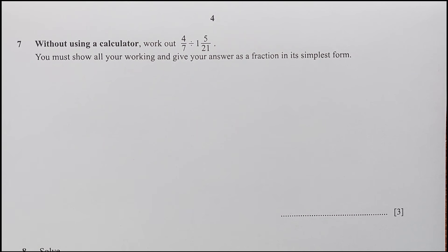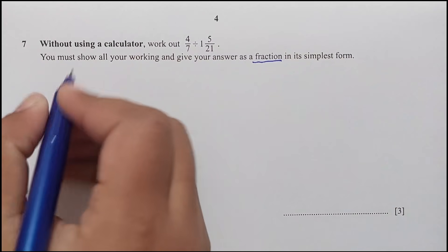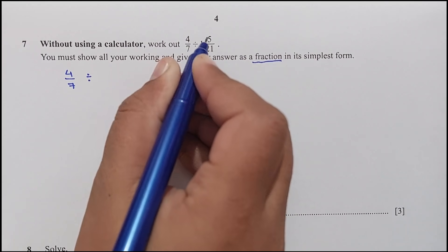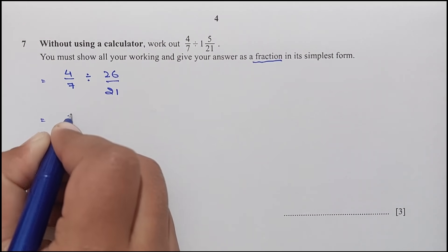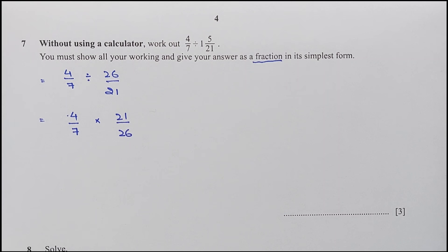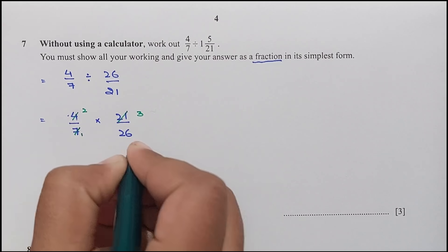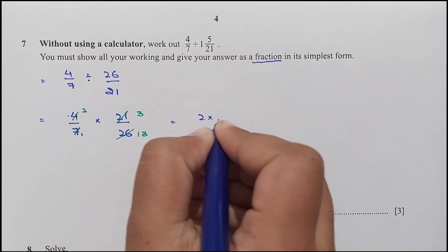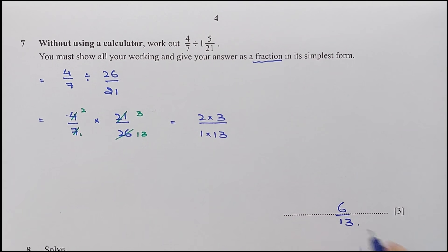Question number 7: without using a calculator, work out 4/7 divided by 1 and 5/21, giving your answer as a fraction in its simplest form. Converting the mixed number: 21 times 1 is 21, plus 5 is 26/21. So we have 4/7 times the reciprocal 21/26. Simplifying: 4/7 × 21/26 = 6/13.